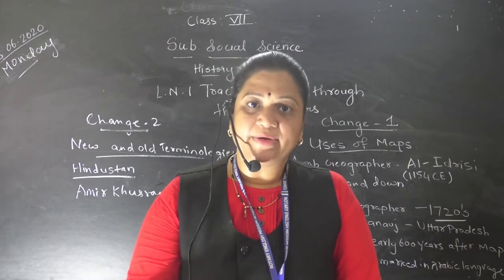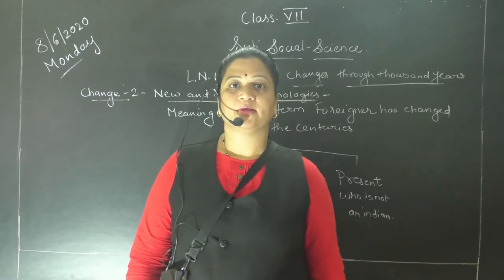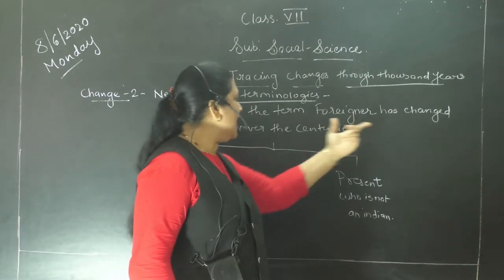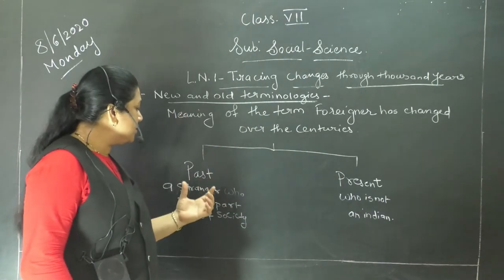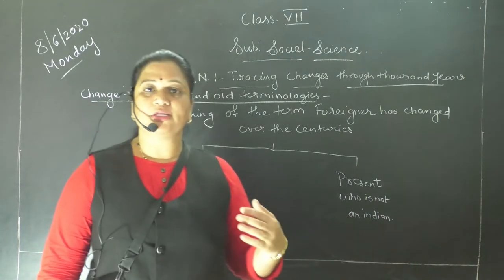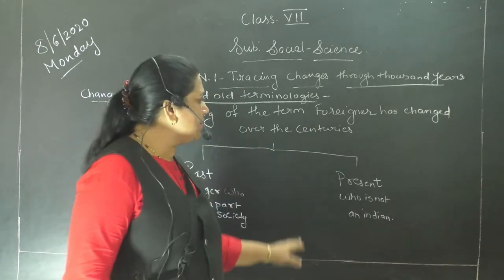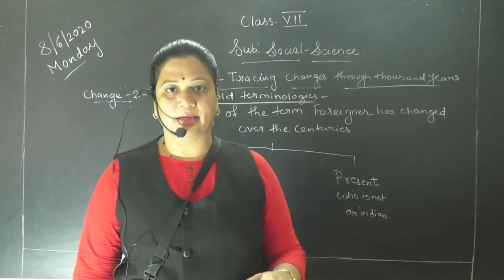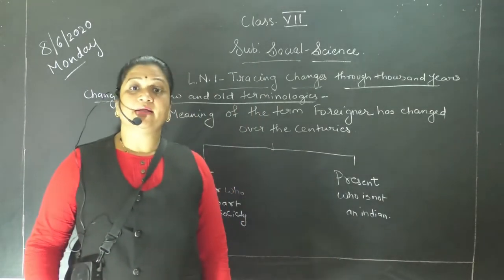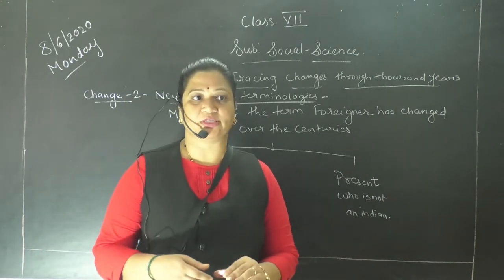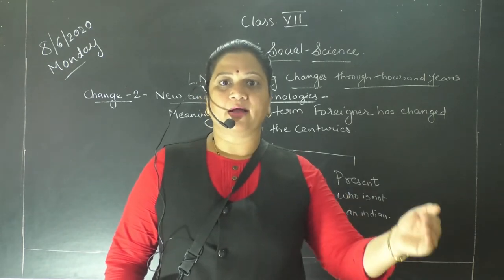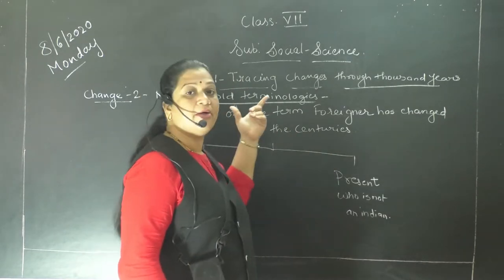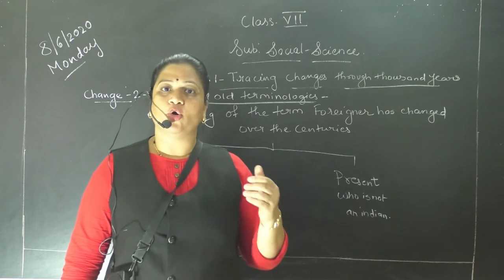After changes number 1 and 2, in the second change we also see one more term — 'foreigner.' The meaning of foreigner has changed over the years. In the past, a stranger who was not part of the society was considered a foreigner. But today, a person from another country, like someone coming from America to India, is called a foreigner. In the past, even a person going from Agra to Delhi was called a foreigner — a stranger to that society.